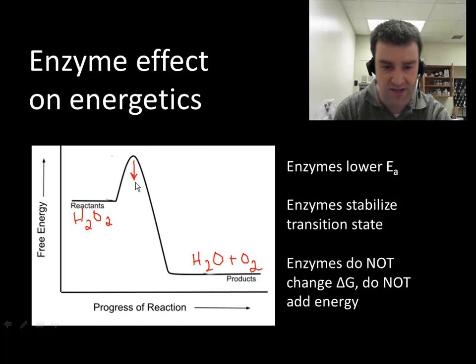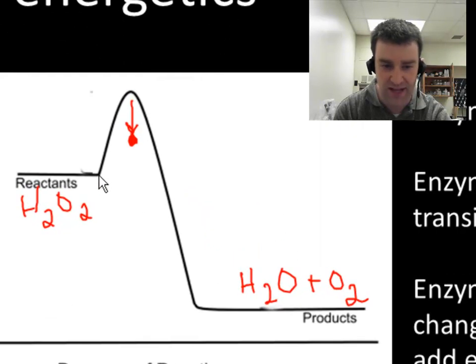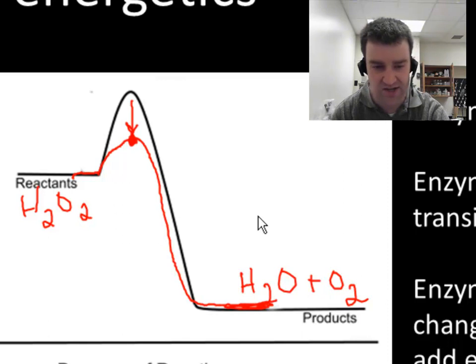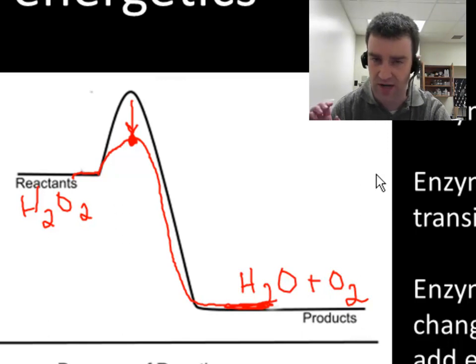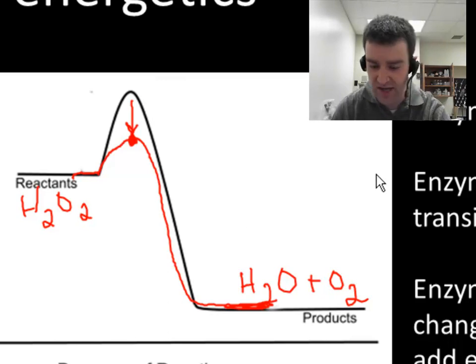By stabilizing the transition state, let's say this is the new transition state with an enzyme-catalyzed reaction, the new reaction pathway would look something like this. So notice that the reactants and products energy level stays the same. Enzymes do not affect the reactants, do not affect the products. They simply change the transition state in between by stabilizing it or lowering its energy.